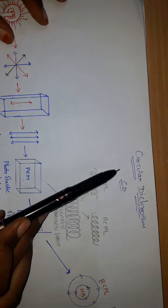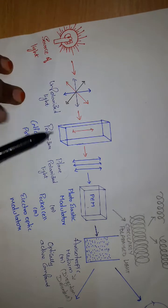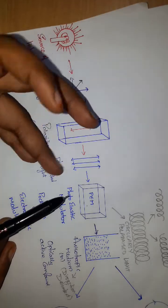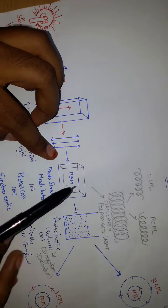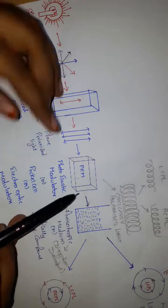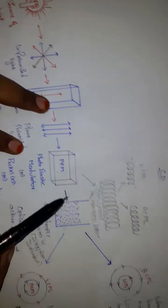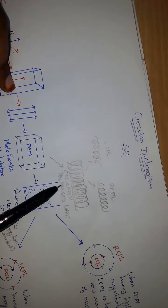Now, coming to circular dichroism (CD). The process up to plane polarized light is the same as ORD. The plane polarized light is then incident on a photoelastic modulator — or alternatively, a Pockels cell or electro-optic modulator. This converts the plane polarized light into circularly polarized light, which has both left circularly polarized light (LCPL) and right circularly polarized light (RCPL).